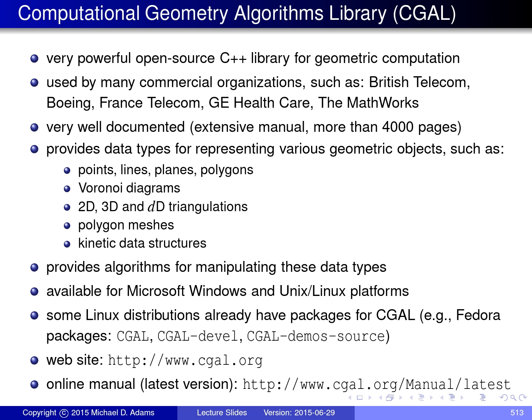The Computational Geometry Algorithms Library, better known as CGAL, is a very powerful open-source C++ library for geometric computation. It's used by many commercial organizations as well as many open-source projects. It's very well documented software with a very extensive manual.